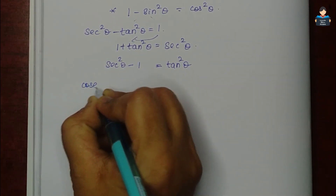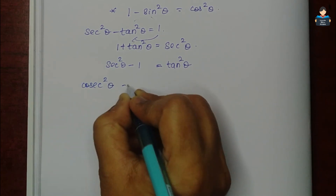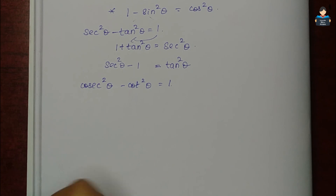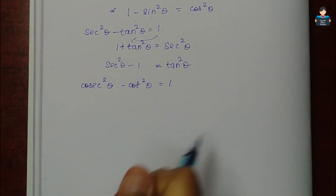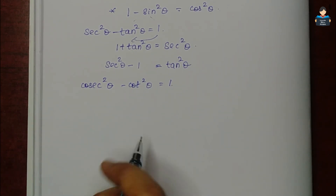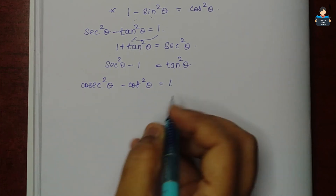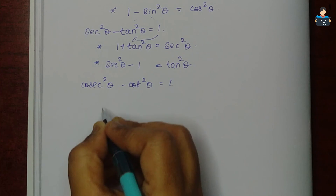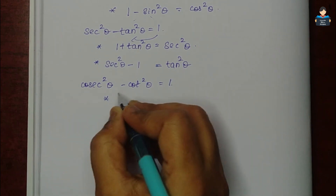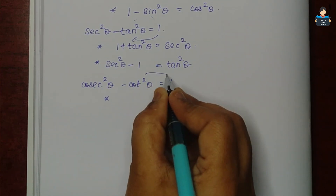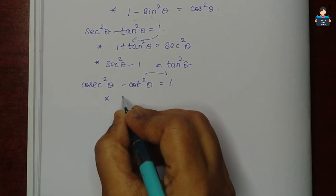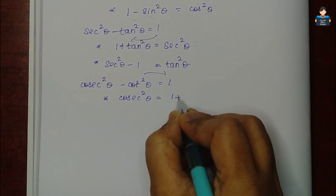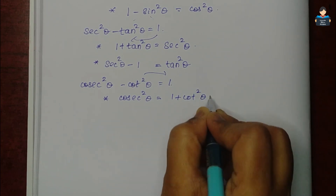The next formula is: cosec²θ - cot²θ = 1. From this we derive: cosec²θ = 1 + cot²θ.